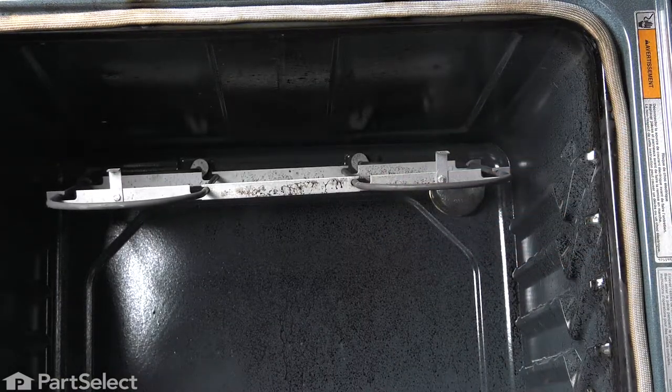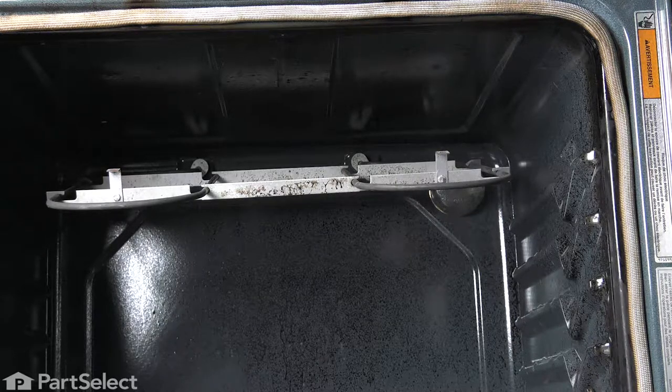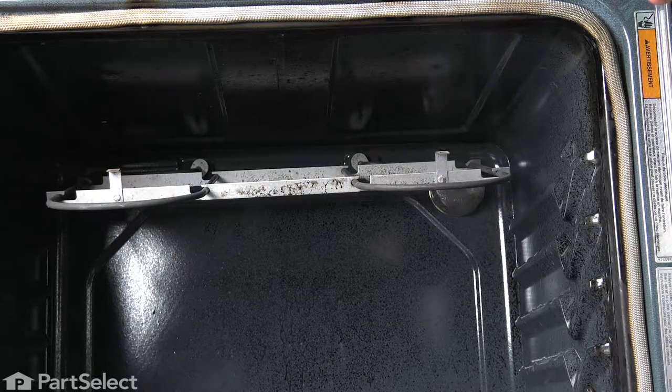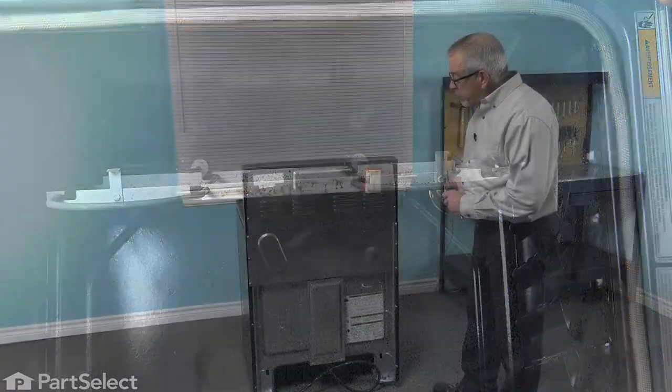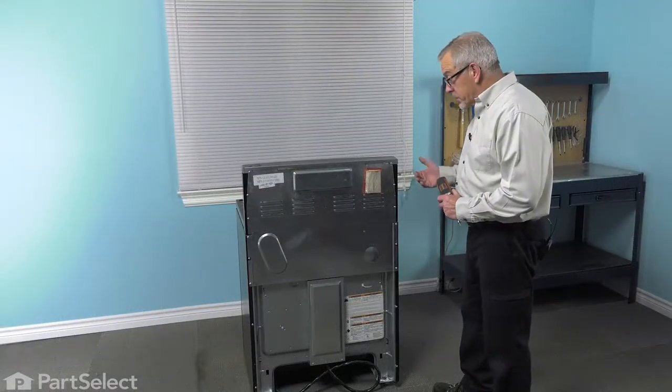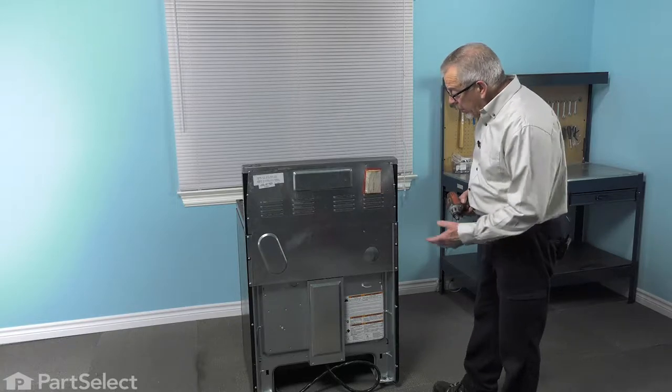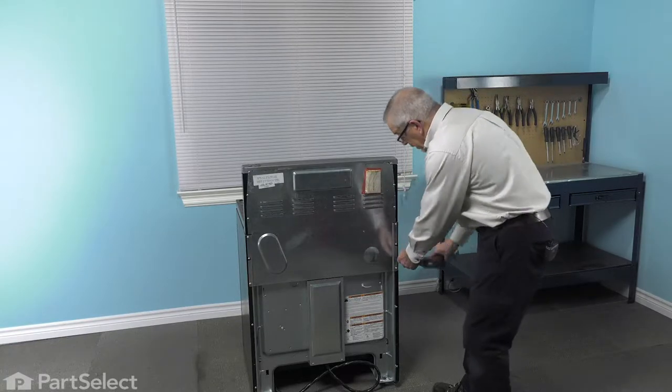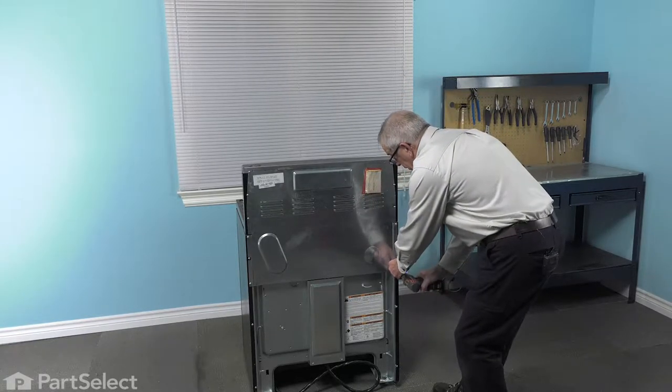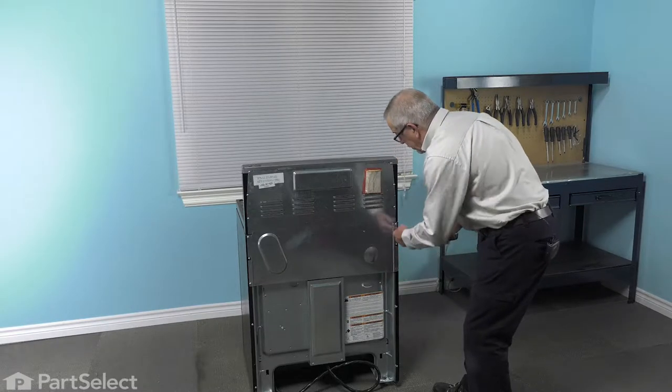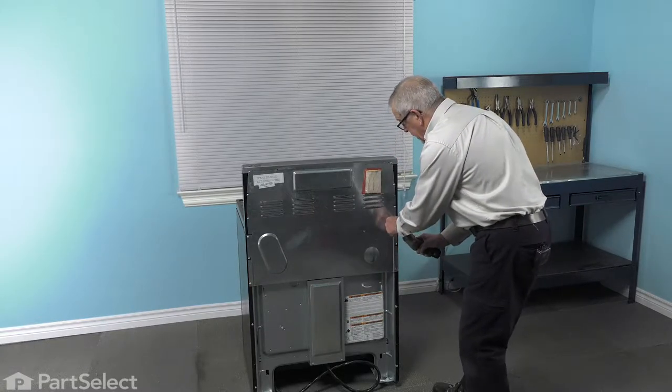Now, our next step will be to remove the back panel so that we can disconnect the two wires that connect to that broil element. Now that we've got the range pulled forward, we've also disconnected the mounting screws for the broil element, we're next going to take off this upper back panel. In this particular model, there are five screws along either side.